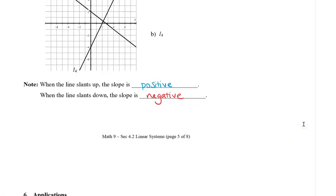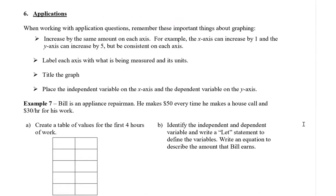Next, let's take a look at how to apply linear relations to an application problem. So when working with application questions, remember these important things about graphing. First, we want to increase by the same amount on each of the axes. So for example, the x-axis can increase by 1, and make sure you keep increasing by 1. The y-axis can have a different increase, so let's say we increase by 5, as long as it's consistent for each of the individual axes. Label each axis with what is being measured and also the units. Give a title to the graph, and remember to always place the independent variable on the x-axis and the dependent variable on the y-axis.